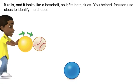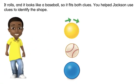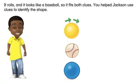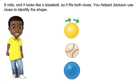It rolls, and it looks like a baseball, so it fits both clues. You helped Jackson use clues to identify the shape.